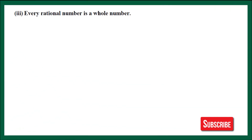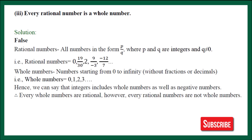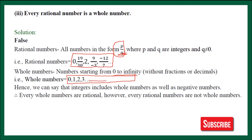Part 3: Every rational number is a whole number. Rational numbers are numbers that can be written in P upon Q form where Q is not equal to 0. Here I have written a collection of rational numbers — all these can be written in P upon Q form. Whole numbers are numbers starting from 0 to infinity: 0, 1, 2, 3 and so on. We check: is every rational number a whole number? For example, 0 is in the whole numbers family, but 19 upon 30 is not in this family. Whole numbers do not include fractions and decimals. So, every rational number is a whole number — this statement is false, because fractions have no place in the family of whole numbers.